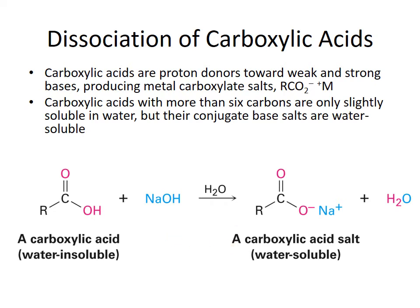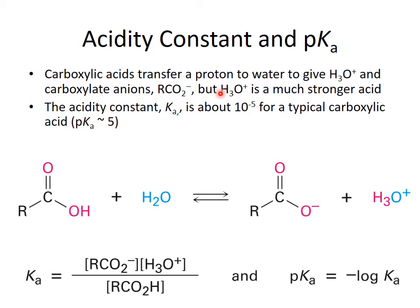The pKa of acids indicates their strength. Remember that the lower the pKa, the more acidic a compound is. Carboxylic acids are weak acids and tend to have a pKa of about five. If you substitute them with electron-withdrawing groups, they can lower the pKa below that; if you give them electron-donating groups, their pKa will rise.